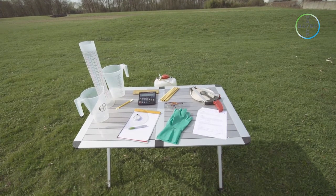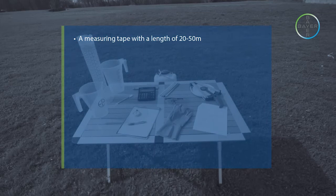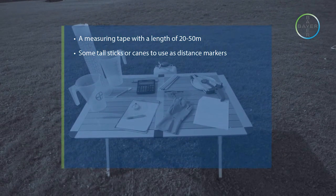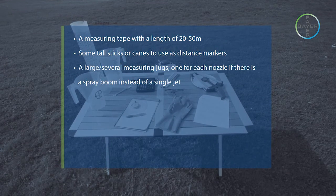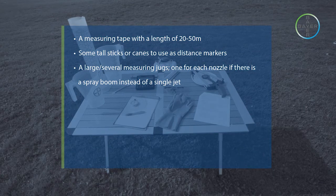Before beginning work, a number of items will be needed: a measuring tape with a length of 20 to 50 meters, some small sticks or canes to use as distance markers, a large or several measuring jugs, one for each nozzle if there is a spray boom instead of a single jet.